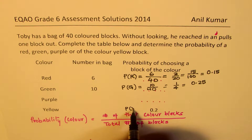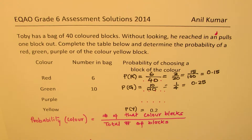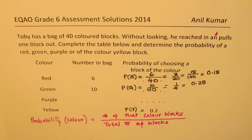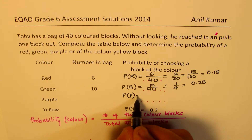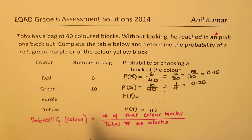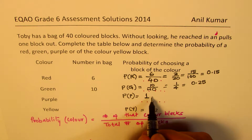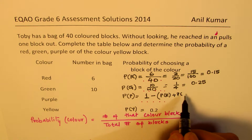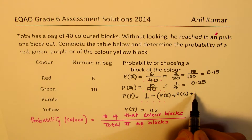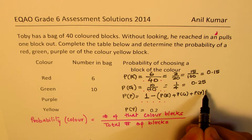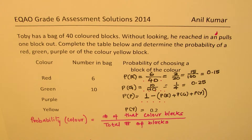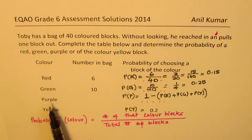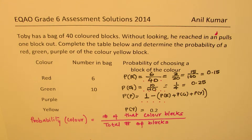We are already given the probability for yellow, which is 0.2. What is the probability for purple? There are 4 colors, so the total probability is only 1. Take away the probability for red, plus probability for green, plus probability for yellow — that should give you the probability for purple. Even without calculating the number of purple blocks, we can find the probability using this method. Isn't that cool?